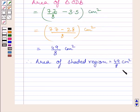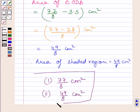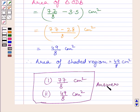This completes the second part of the given question. Our required answers are: area of quadrant OACB equals 77 upon 8 cm squared, and area of shaded region equals 49 upon 8 cm squared. This completes the session. Hope you understood the solution. Take care and have a nice day.